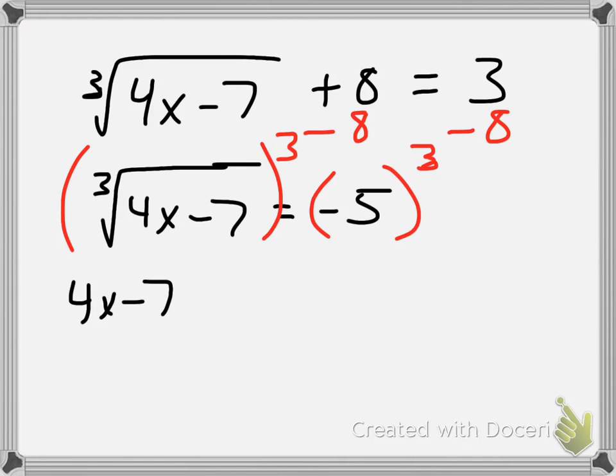On the right side, I'm doing negative 5 to the third power. Now remember, that's not negative 5 times 3. It's negative 5 times negative 5 times negative 5, for a total of 3 times. So in this case, that becomes negative 125.